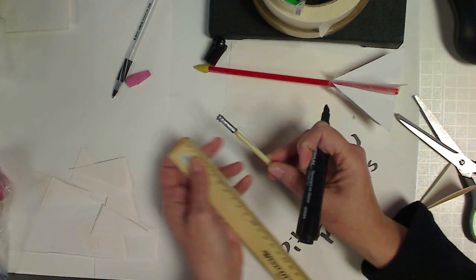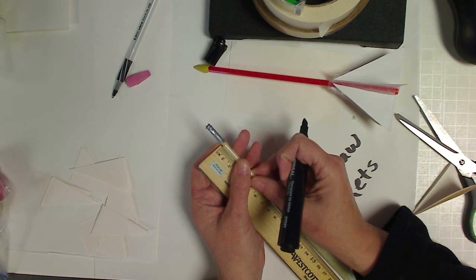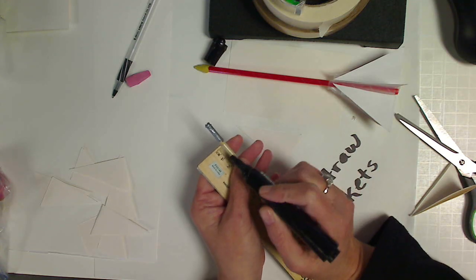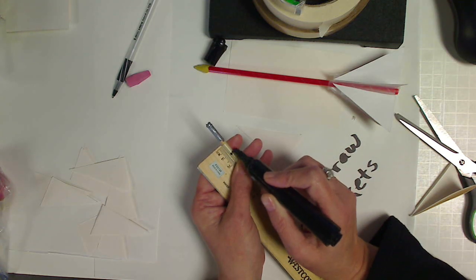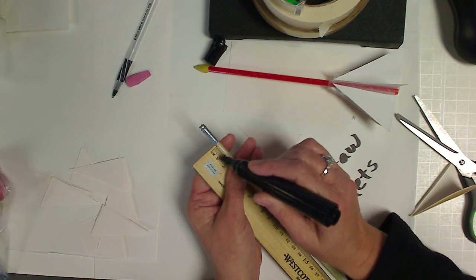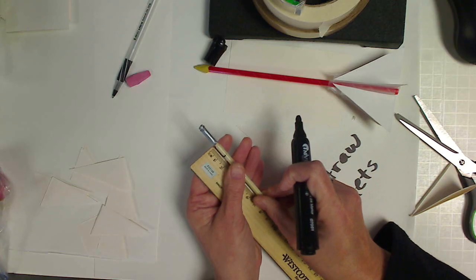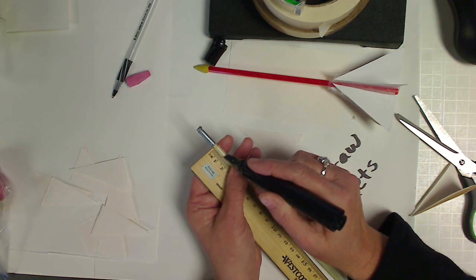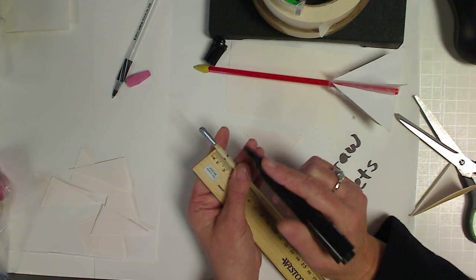What I do normally is I will mark a certain amount of space between the base of the straw onto the straw body. Now, you can take your ruler, you can eyeball it. I usually like doing one centimeter. So I just make a line of one centimeter in order to tell me where I'm going to put the base of the fin.